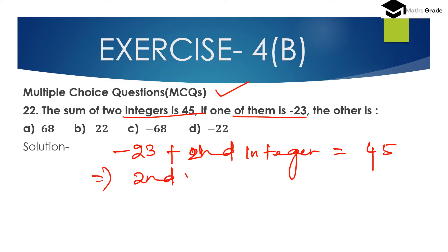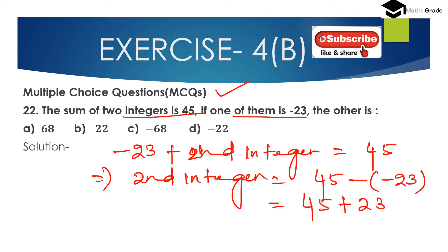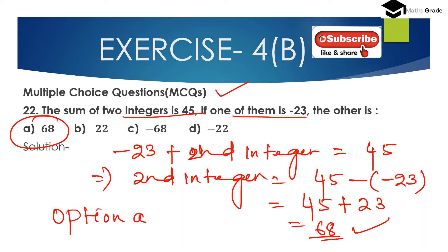The second integer will be 45 minus (minus 23). Minus of minus is plus, so 45 plus 23 equals 68. So option A, 68, is the correct answer. The other integer is 68.